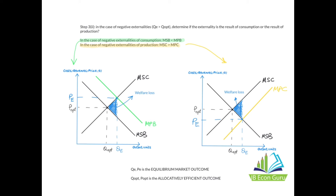For negative externalities of production, the marginal social cost is higher than the marginal private cost. Draw a positively-sloping MPC curve below the MSC curve. This leads to an equilibrium where Q e is greater than Q opt — there is a problem of over-production — and P e is lower than P opt. The producer is not paying the full true cost of producing the product, so the equilibrium price is lower than it should be and the equilibrium quantity is higher than it should be.